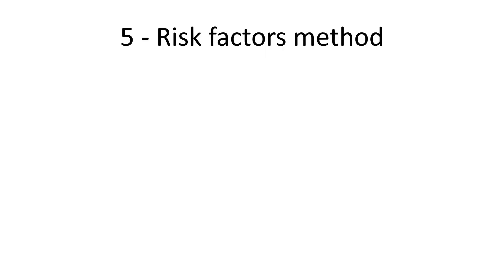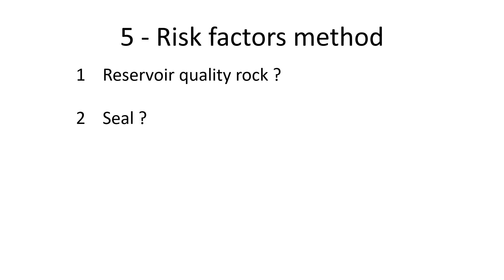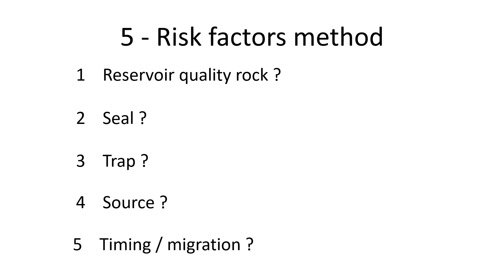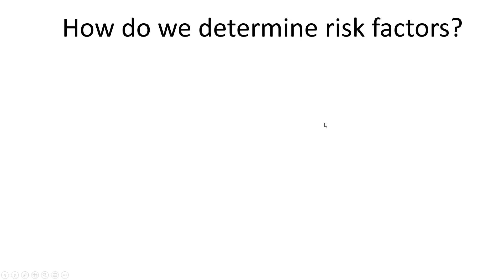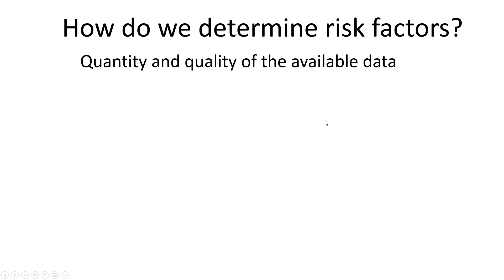We use a five-factor method. The first factor is reservoir rock quality — do we have it? Do we have a seal for the hydrocarbons so they can't leak out? Do we have a trap that we can map and confirm is really there? What about source — do we have a source of hydrocarbons in the area that could expel hydrocarbons and get them trapped in your prospect? And what about timing and migration — are there migration paths, and did migration happen before the faults and traps were formed? You have to risk all of those items.